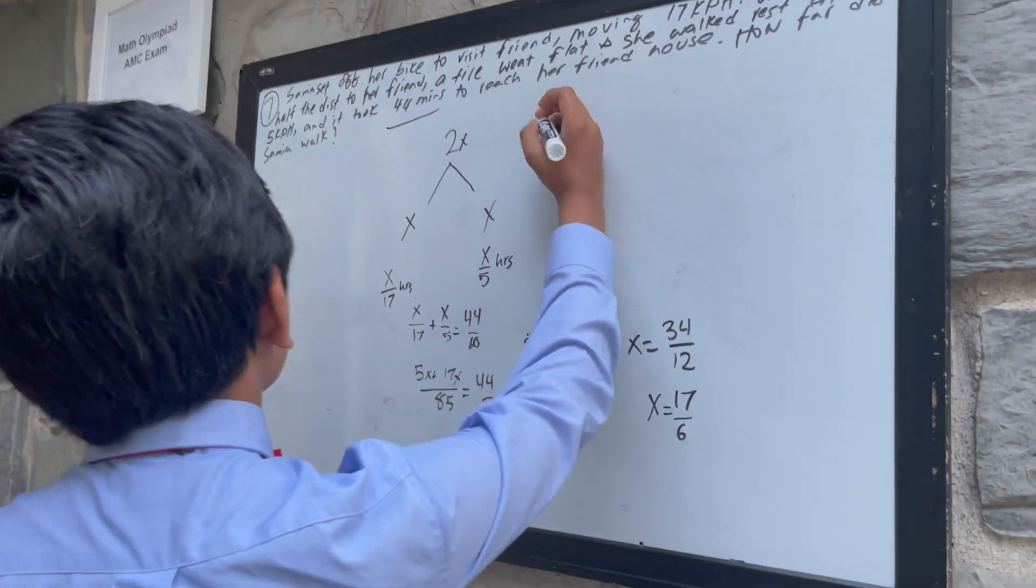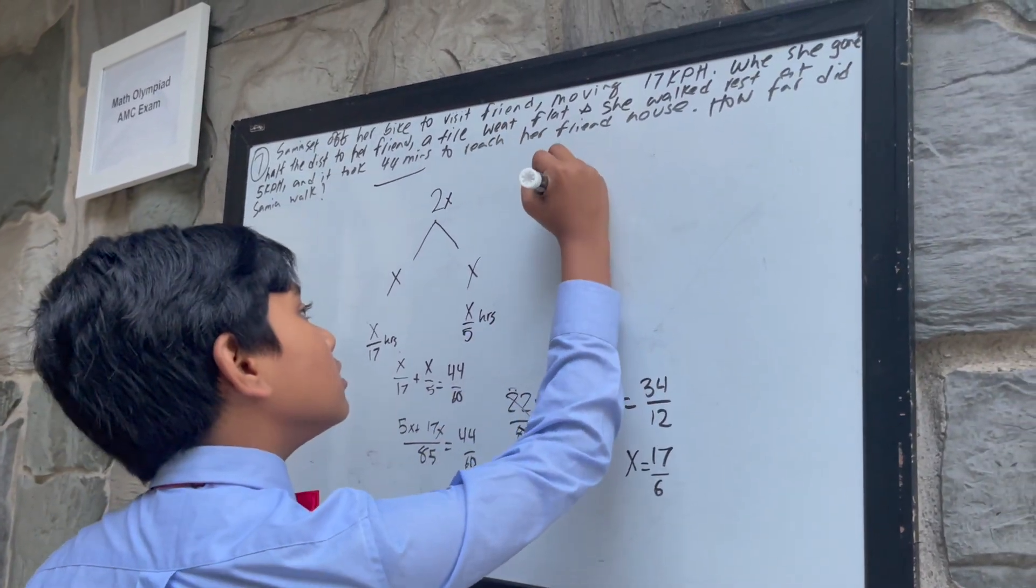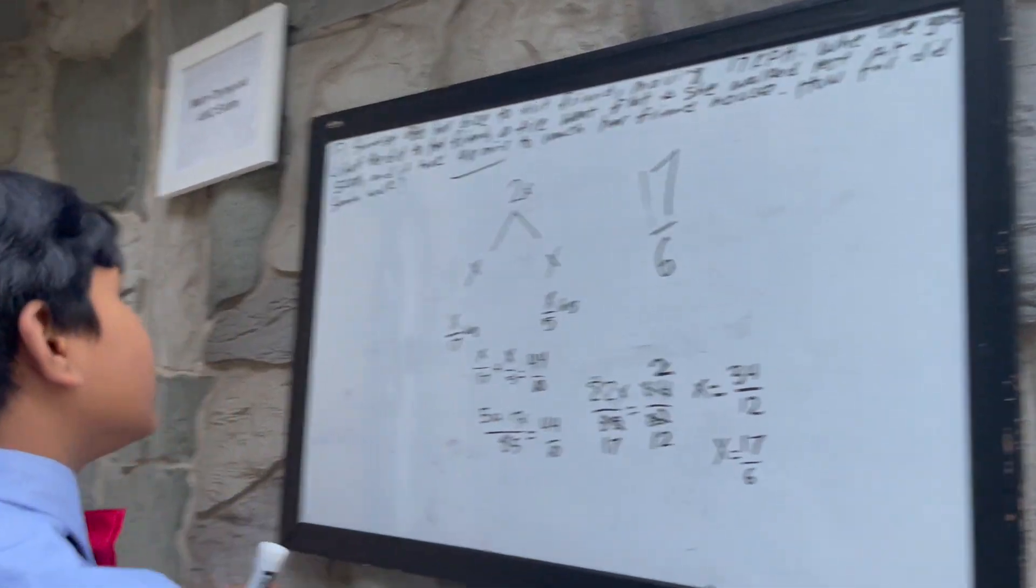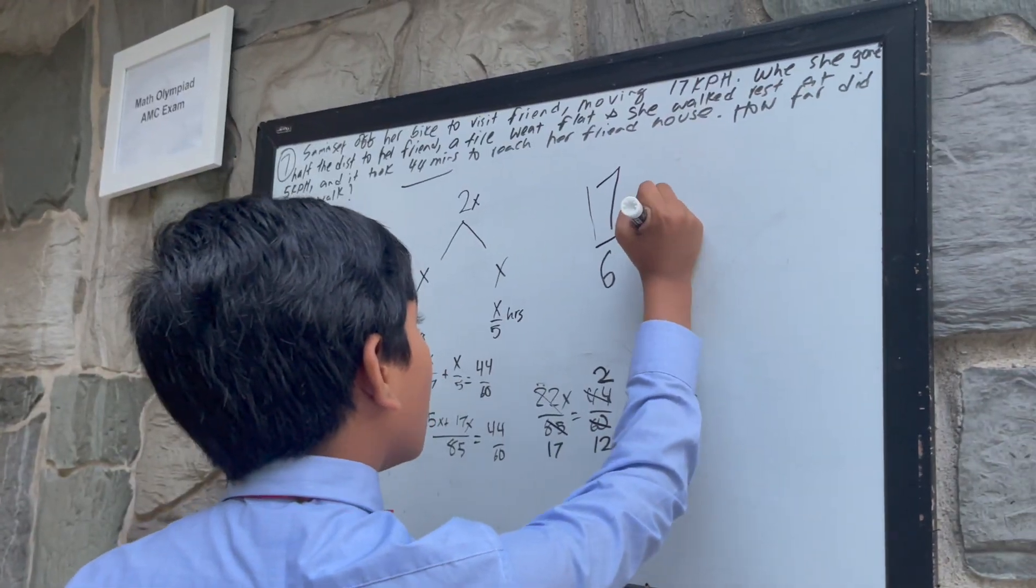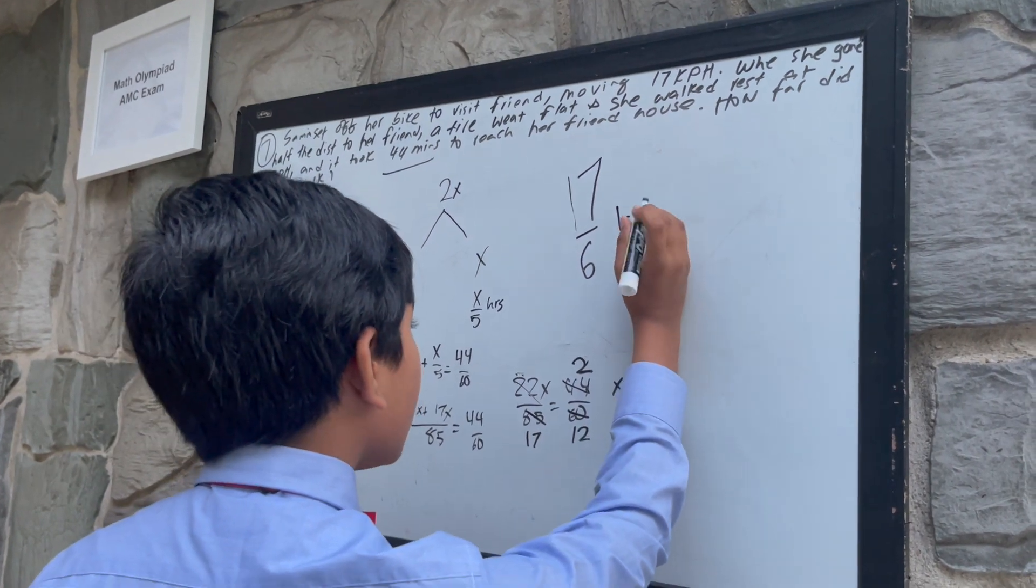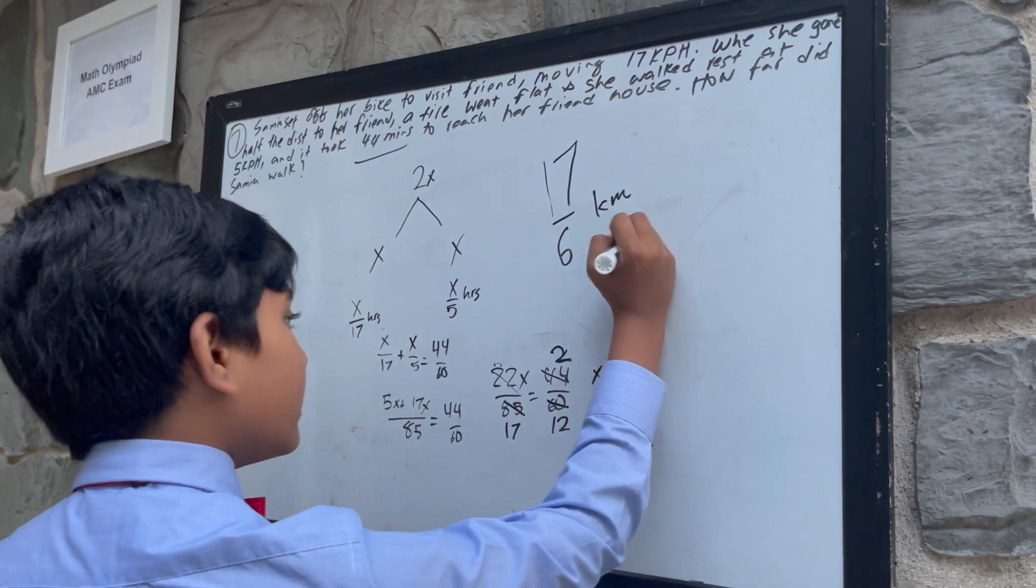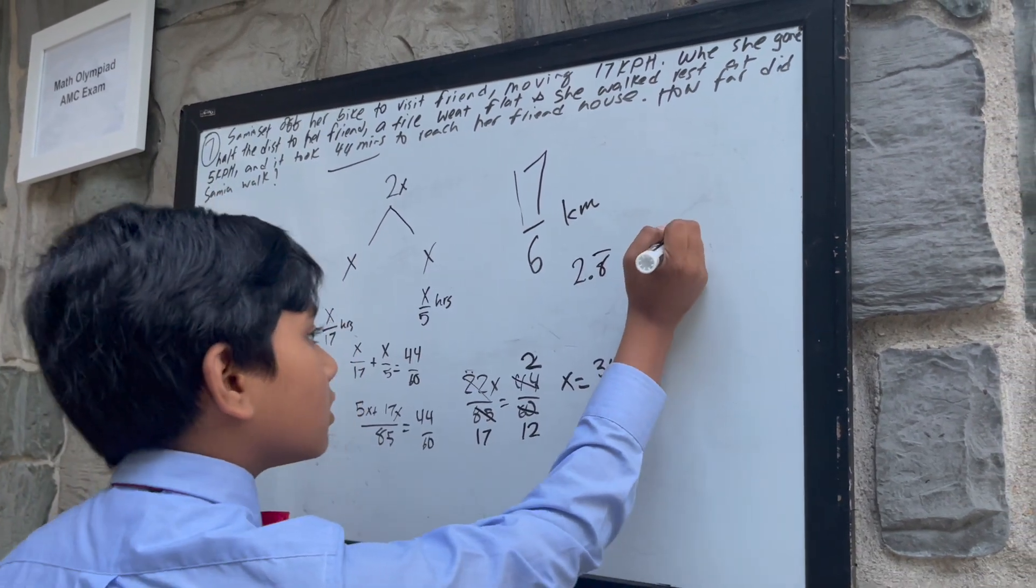Meaning that Ximia walked 17 over 6 kilometers, which is also equal to 2.8 kilometers.